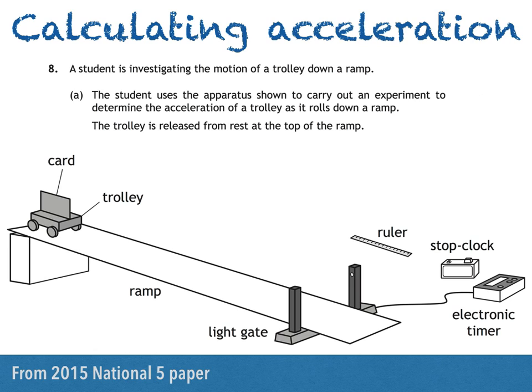Here's an example from the 2015 National 5 paper. A student is investigating the motion of a trolley down a ramp. The student uses the apparatus shown to carry out an experiment to determine the acceleration of a trolley as it rolls down a ramp. The trolley is released from rest at the top of the ramp. The question asks, state the measurements the student must make to calculate the acceleration of the trolley.